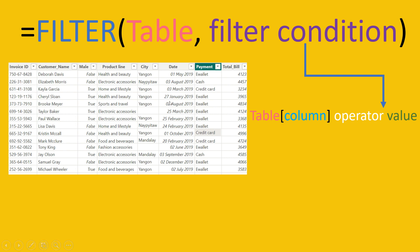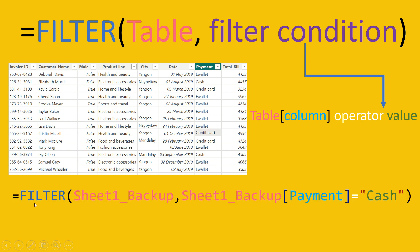Let me give you another example. Say you have a table and you want to create another table that only keeps the payment method as cash. For that, we write the FILTER syntax: FILTER, then the table name — which is Sheet1_backup — then inside brackets we provide the column to filter on, which is the payment column. Then comes the operator equals to, and then in quotes we write 'cash' as the value. This is how you create a subset of a table using filter criteria.